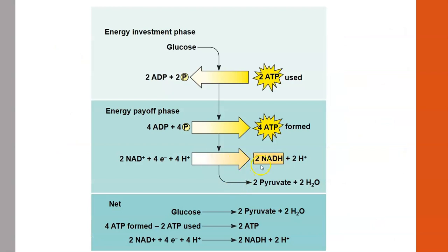In the energy payoff phase, two NAD+ plus four electrons plus four protons yields two NADH plus two protons. The molecule NADH carries potential energy in the form of electrons gathered from those organic molecules—originally glucose. What results after the electrons are taken is the molecule NADH, and then two pyruvate from the remainder of the organic compounds.